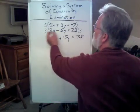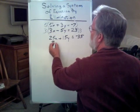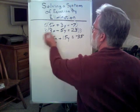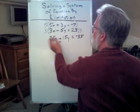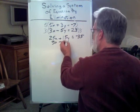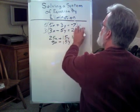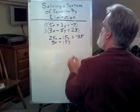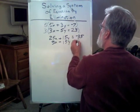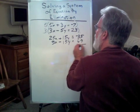Now, the other equation. 3 times 3x is 9x. 3 times minus 5y is minus 15y. And 3 times 23 is 69.